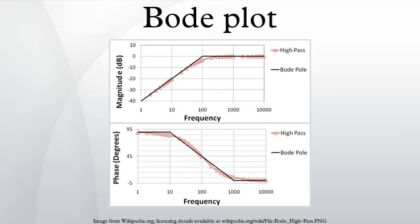A Bode plot is a graph of the transfer function of a linear, time-invariant system versus frequency, plotted with a log frequency axis, to show the system's frequency response. It is usually a combination of a Bode magnitude plot, expressing the magnitude of the frequency response gain, and a Bode phase plot, expressing the frequency response phase shift.